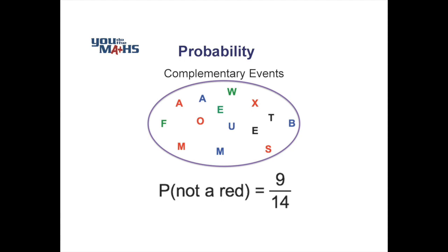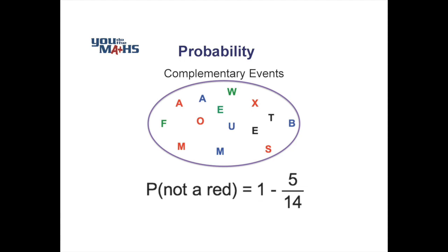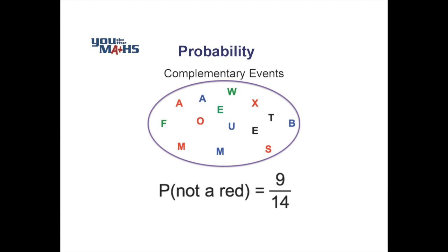We know the probability of selecting a red is 5 out of 14, and the probability of picking any letter in that set is 1 — the maximum possible probability. So the probability of not picking a red is 1 minus 5 over 14, in other words everything else. The events 'red' and 'not red' are said to be complementary because together they cover everything in the sample space, and the probabilities of two complementary events always add up to 1. Doing that calculation, 1 minus 5/14 equals 9/14 — the same result we got by counting.